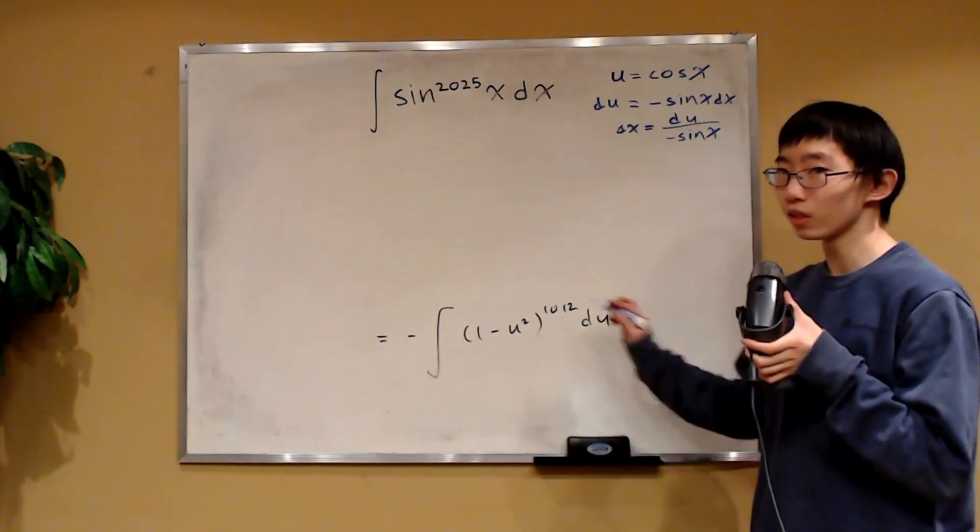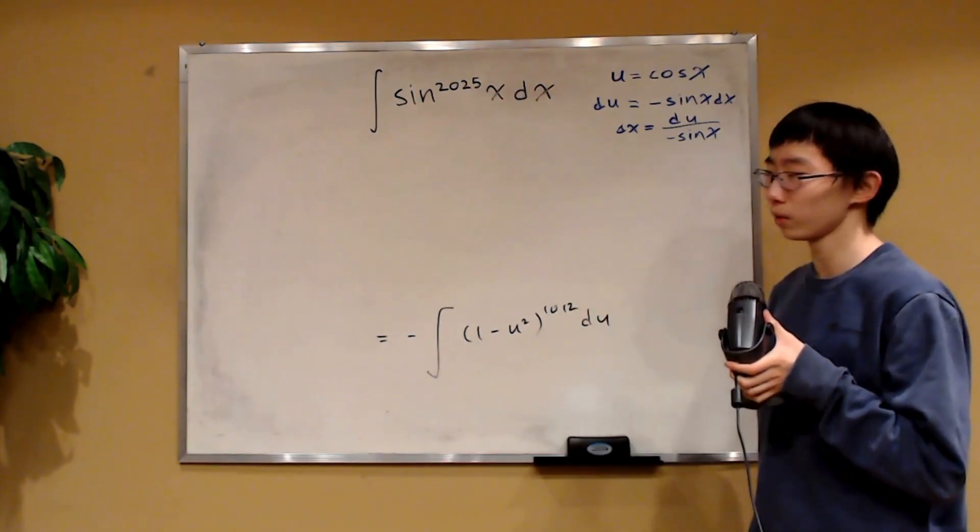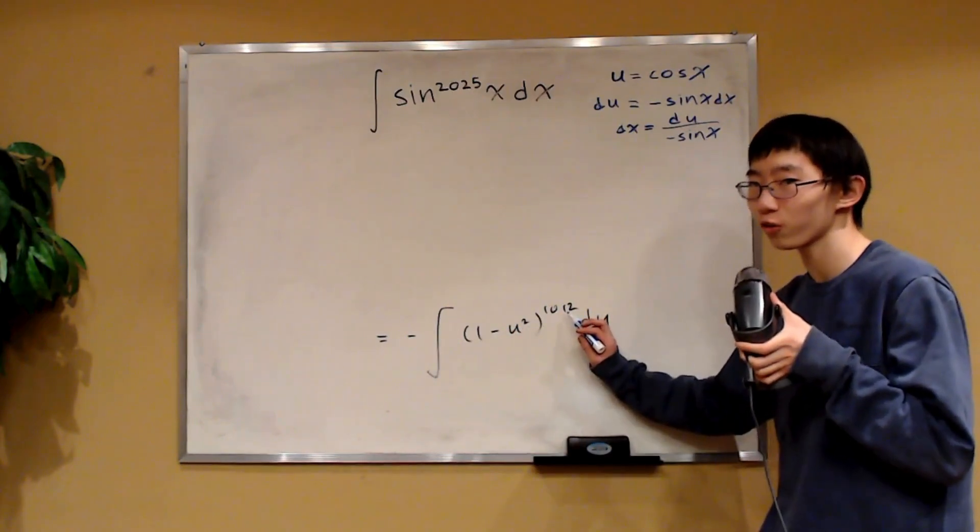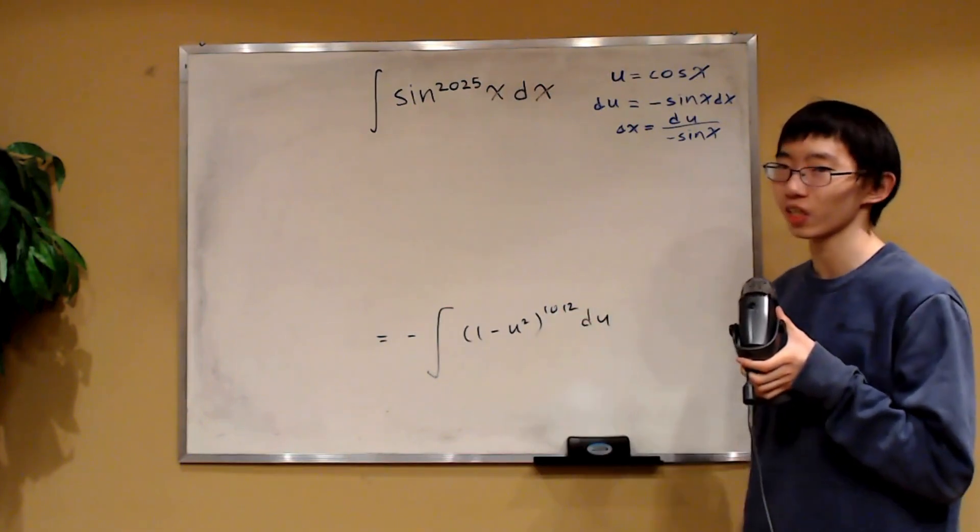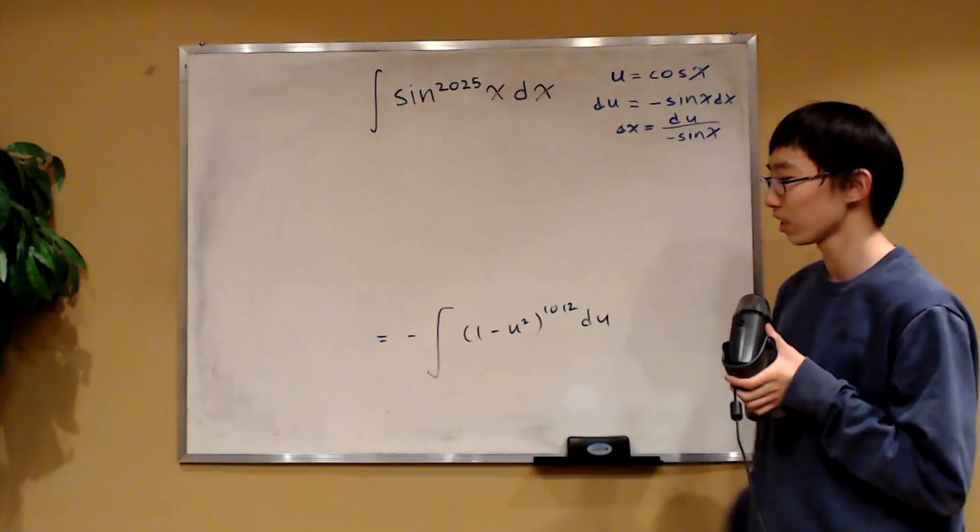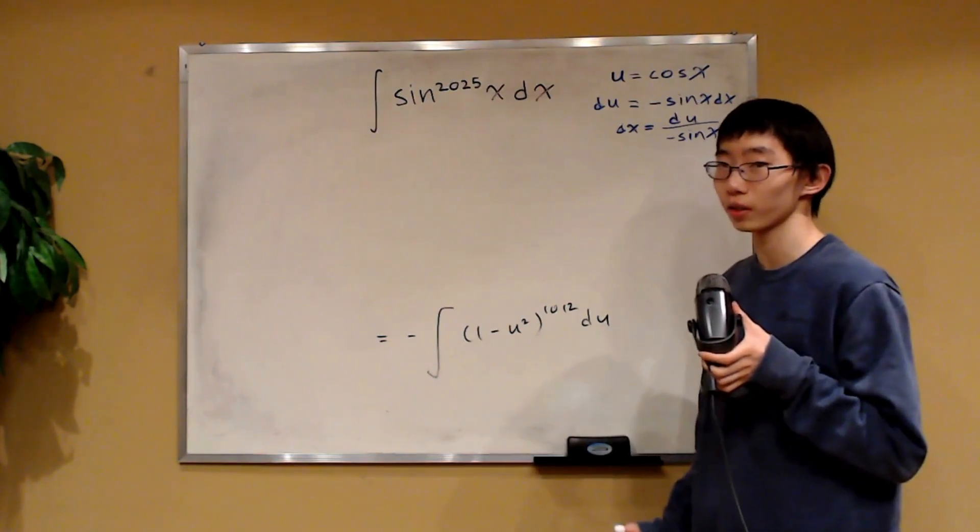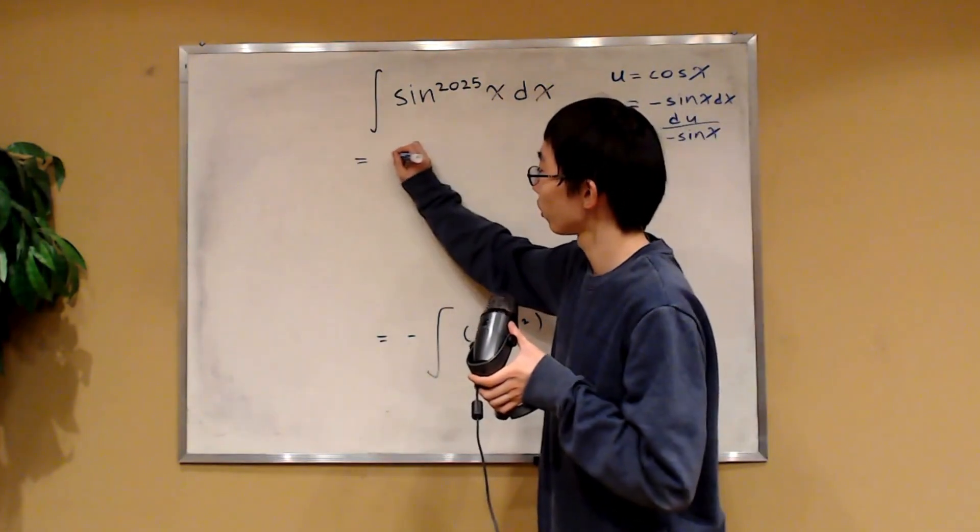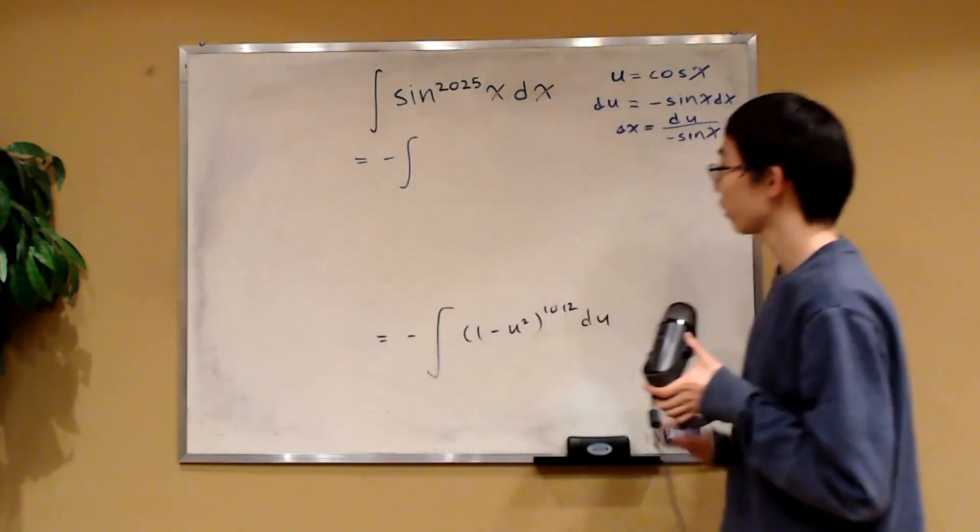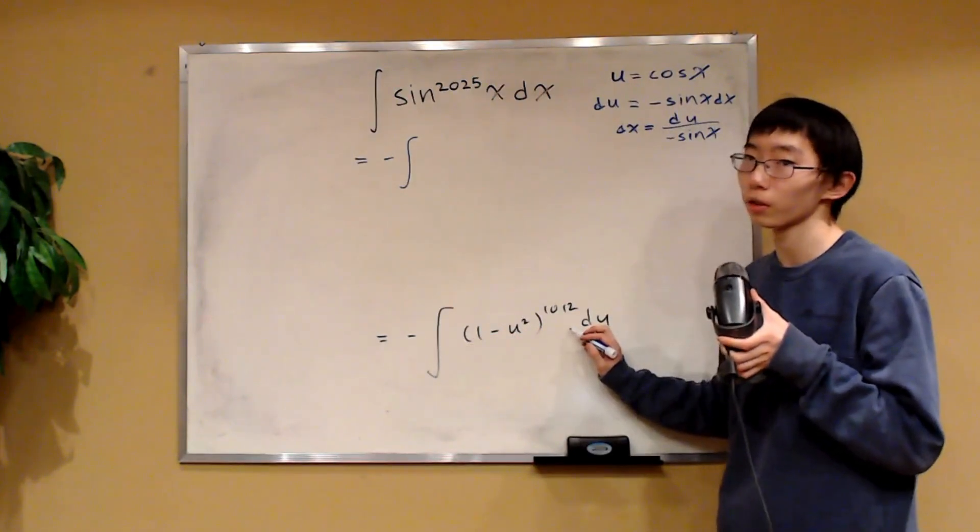Now, admittedly, this is a huge polynomial. I mean, this is 1 minus u squared to the 1012 power. So we're likely going to have to use summation notations to write this integral out. However, that's okay. That's still going to be a valid answer. So this integral over here is equal to the negative integral of, and you can expand this over here with binomial theorem.